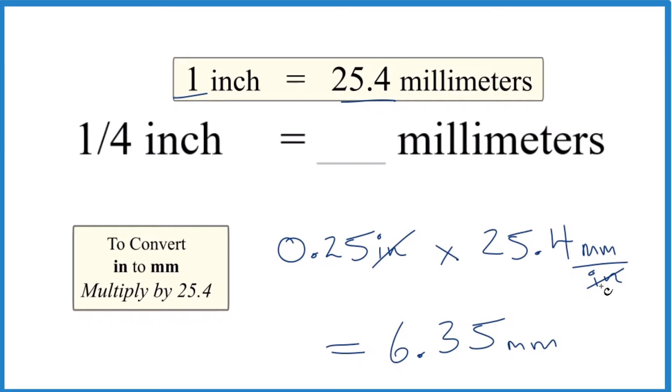Good way to check your work. But either way, when we convert from inches to millimeters, we multiply by 25.4. So one-quarter inch or one-fourth inch is 6.35 millimeters. This is Dr. B. And thanks for watching.